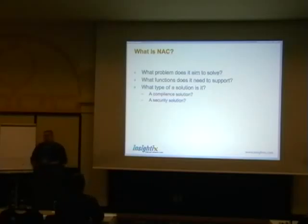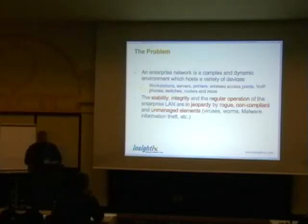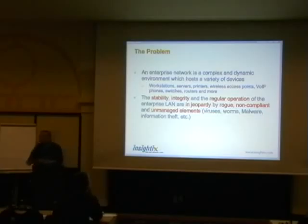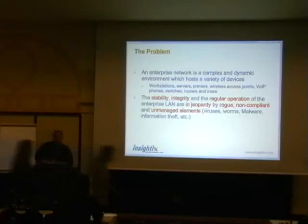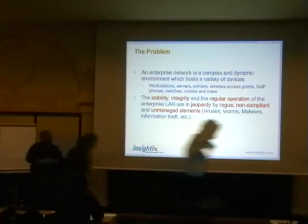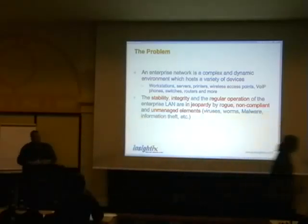Is it a compliance solution? Is it a security solution? What actually is the problem that network access control is aiming to solve? The problem is simple: our enterprise LAN is a jungle. Everything with an RJ45, everything with some kind of a connectivity capability — wireless and so forth — is able to be connected to the network and gets immediate network access.